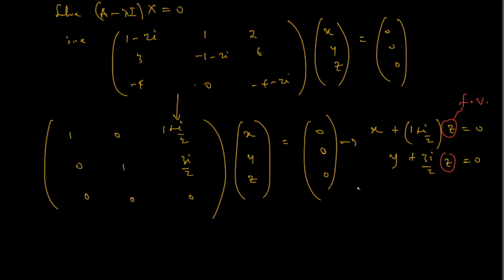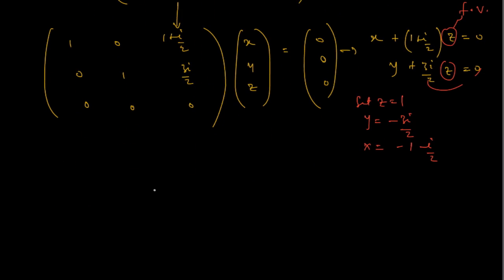Since z is a free variable, I'm going to go ahead by setting z equal to 1. So if z is 1, then y equals negative 3i over 2, and x equals negative (1+i) over 2. So my eigenvector k1 is going to be: negative (1+i)/2, negative 3i/2, and 1.